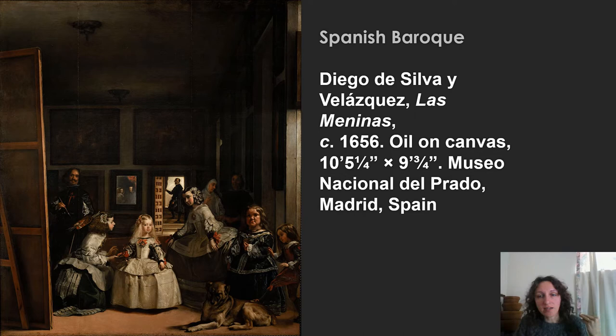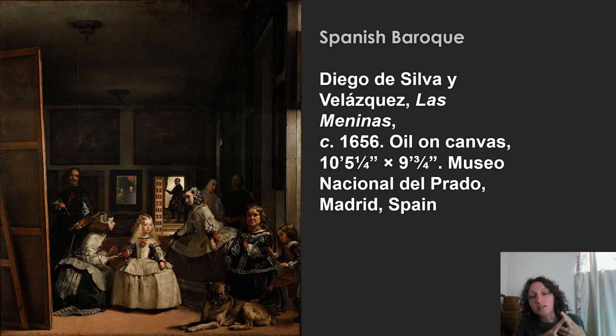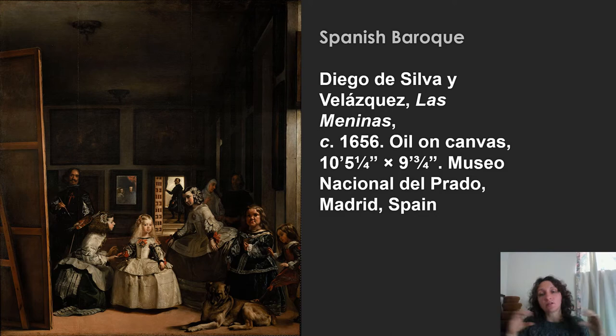We saw this artwork way back at the very beginning of class when we learned about contextual analysis — all those different types of analysis, the social analysis of the royal court, the identity of the characters, and how the artist is elevating his own social status. I'm not going to recant all that now, but I wanted to include it so you can see this artwork in its chronological context.